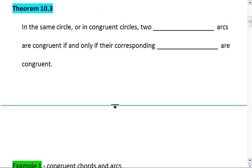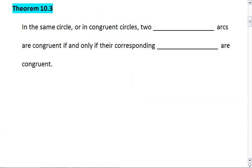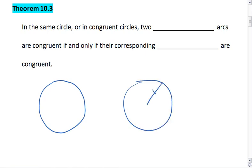Theorem 10.3 tells us that in the same circle or congruent circles, so if we have two congruent circles, we know they're congruent if their radius is the same.